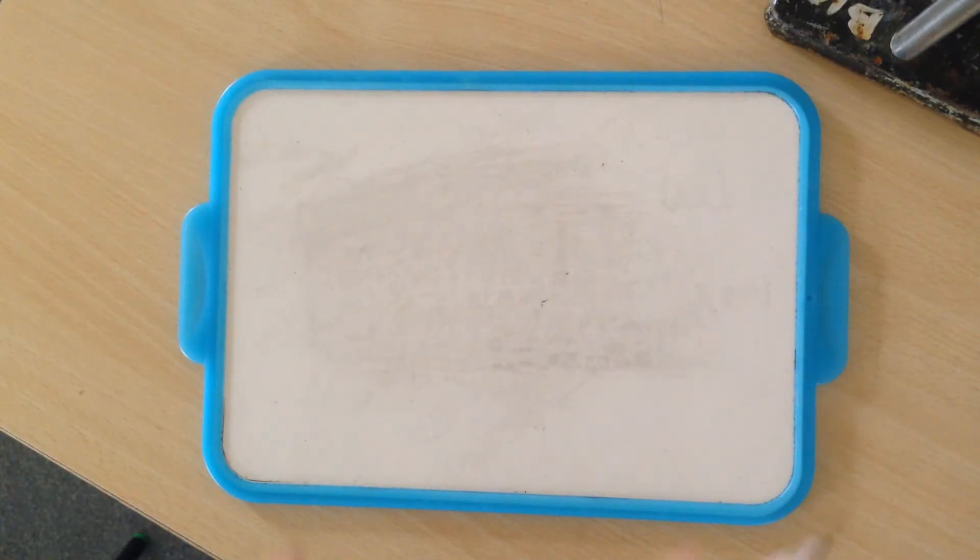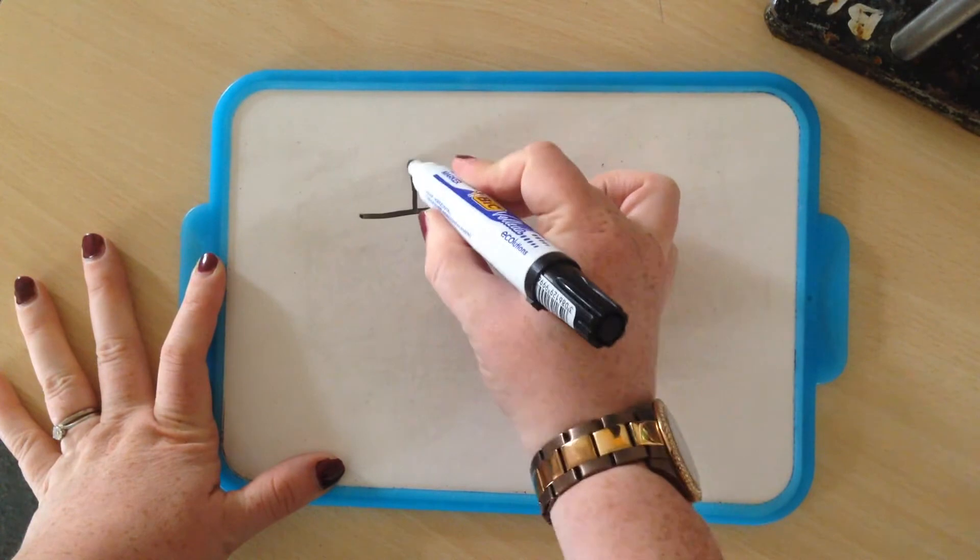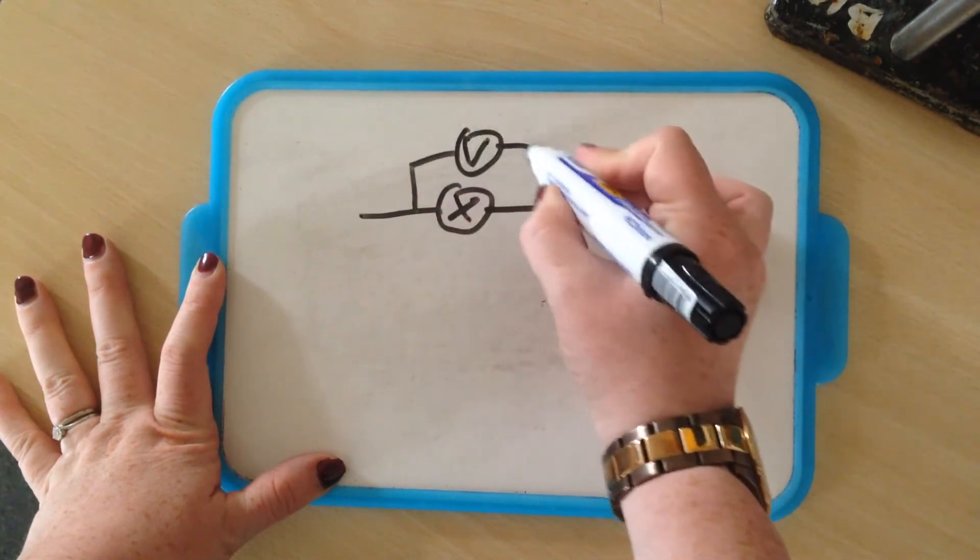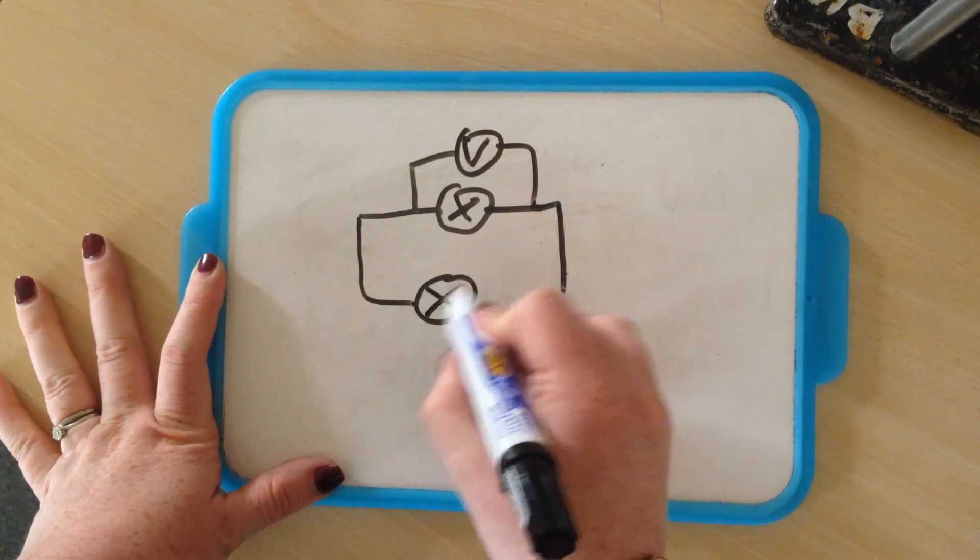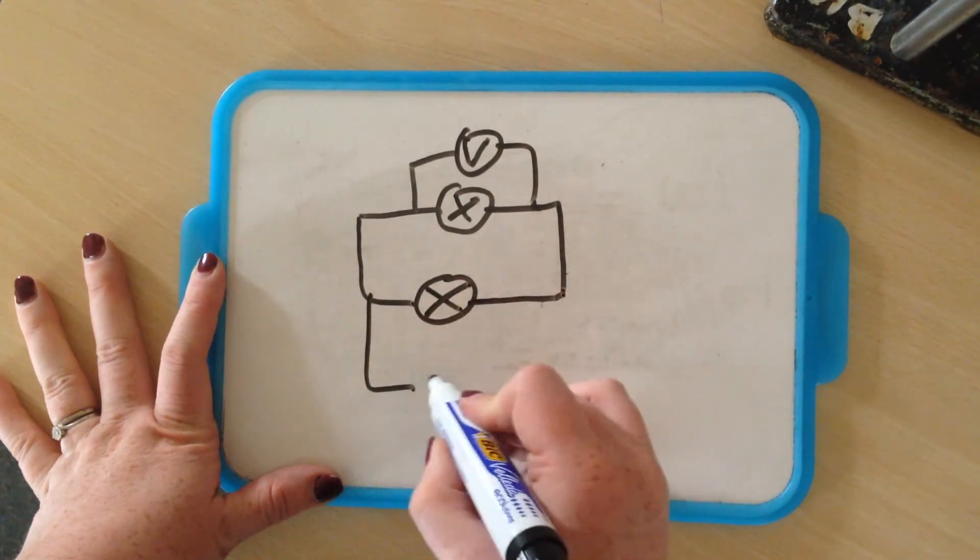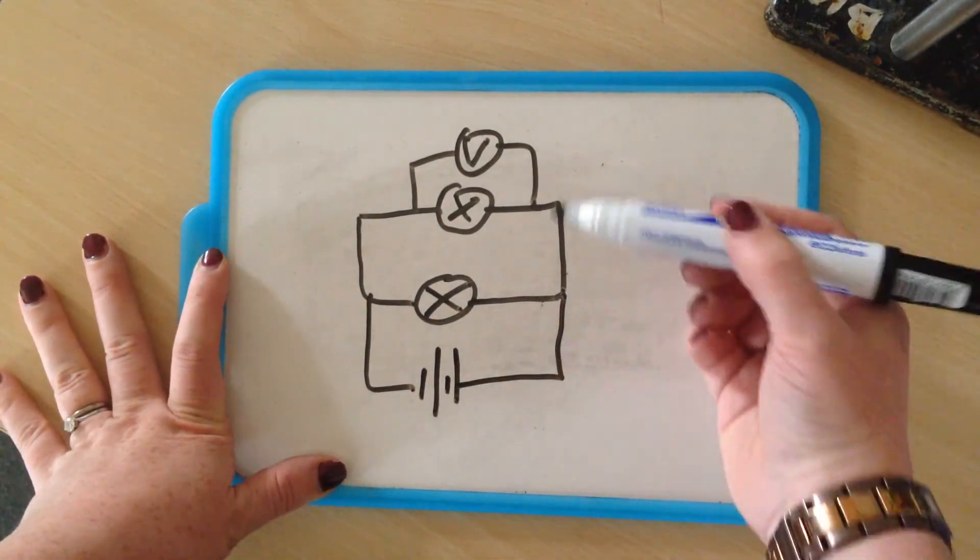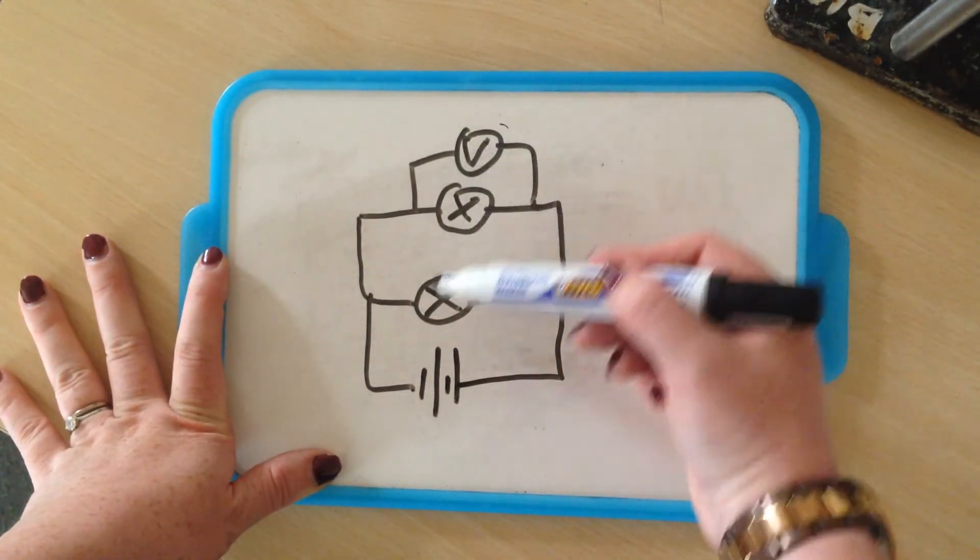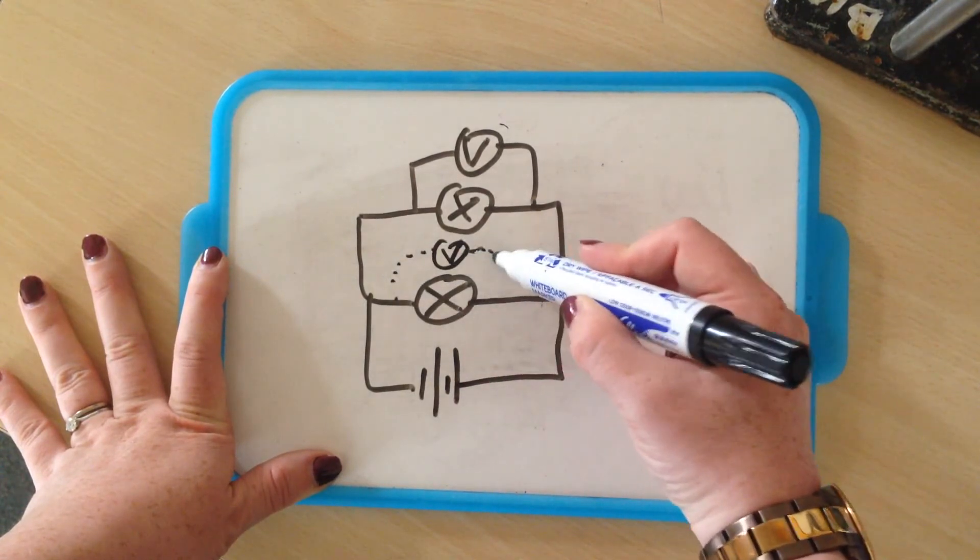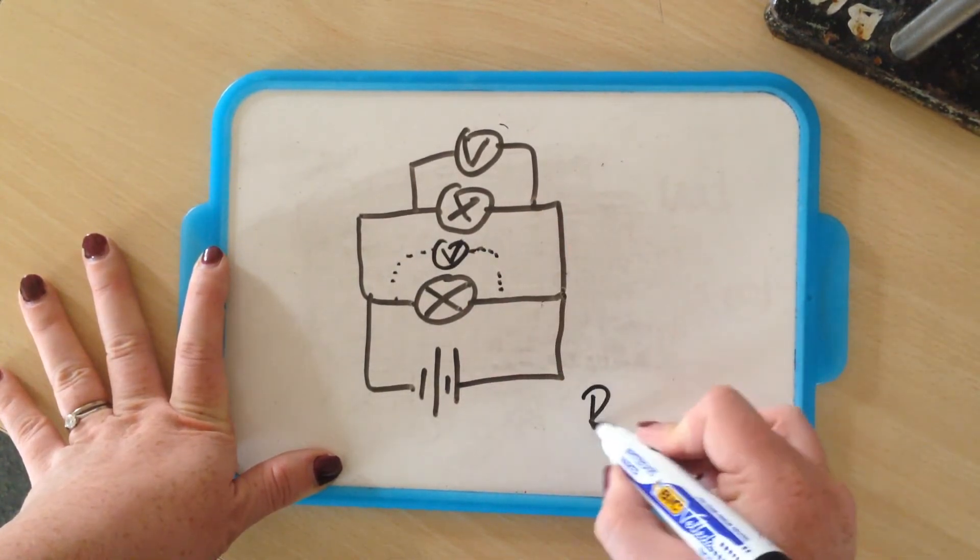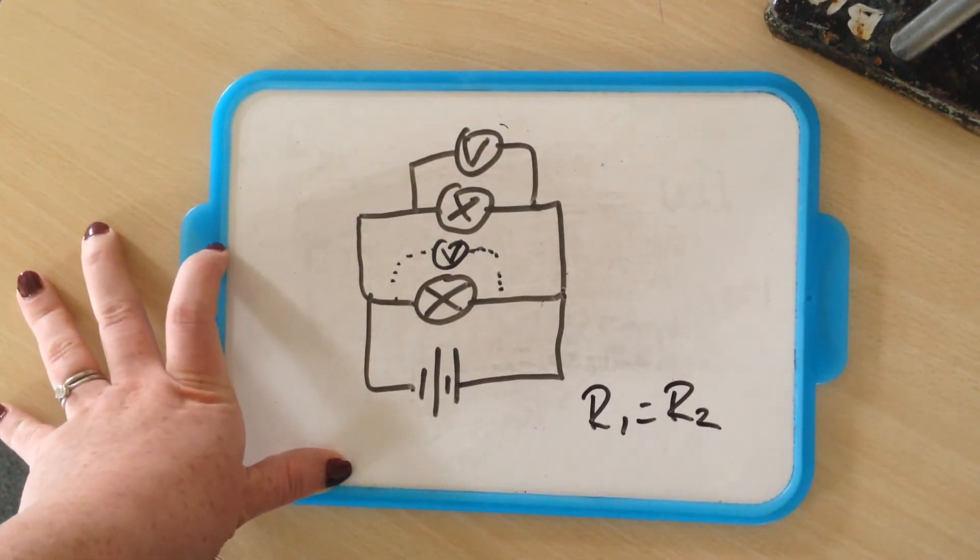So if I was going to draw that last circuit for you, I had my bulb, it had a voltmeter attached across it, this was in parallel with another bulb here and then my battery down here. And it doesn't matter where I put this voltmeter, whether I put it here or whether I put it here, the reading is always going to be the same for a parallel circuit.